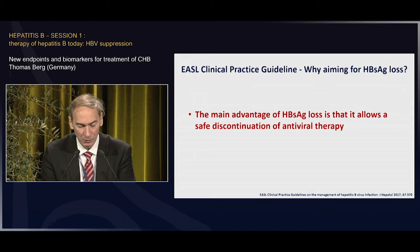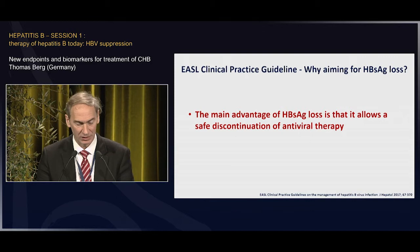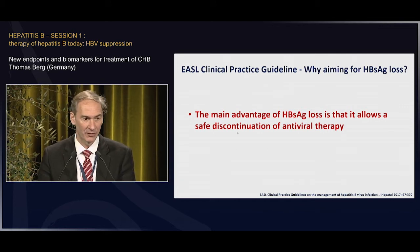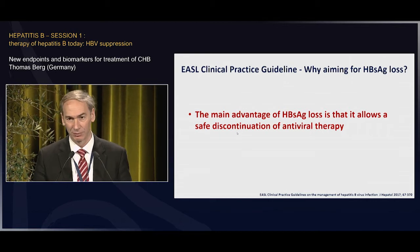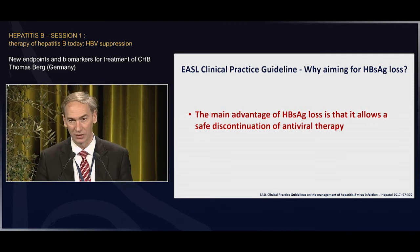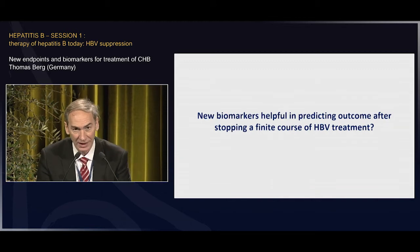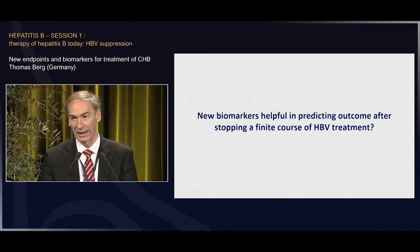I would like to come to the last part of my talk. As was already mentioned in the EASL guideline, the main advantage of aiming for HBsAg loss — and this still holds true — is that it allows safe discontinuation of antiviral therapy. It is confirmed in many studies that HBsAg loss is mainly stable, and the risk of reactivation without immunosuppression is then very, very low. The question again is: have these new biomarkers also been explored for whether they are helpful in predicting outcome after stopping finite treatment?